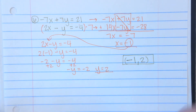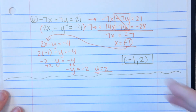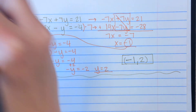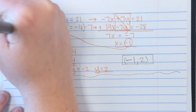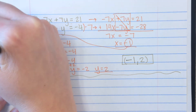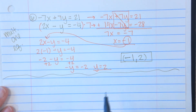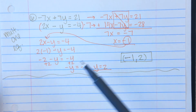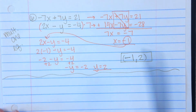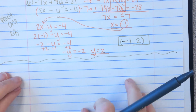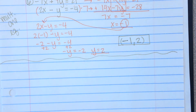Examples 5 and 6 required multiplying one equation. If you're not sure whether to multiply one or both, you can always multiply both — which is what we're going to do for examples 7 and 8.